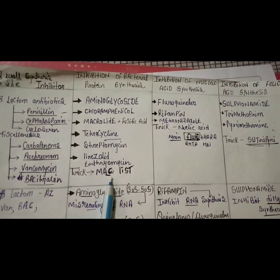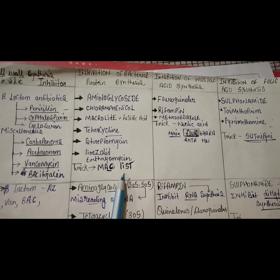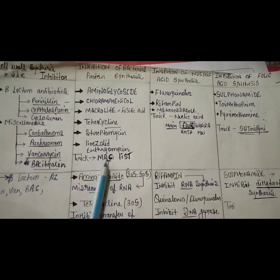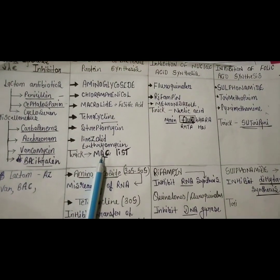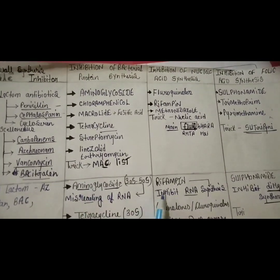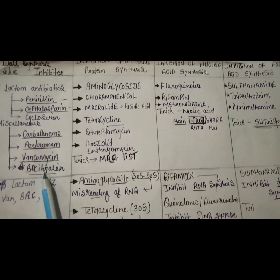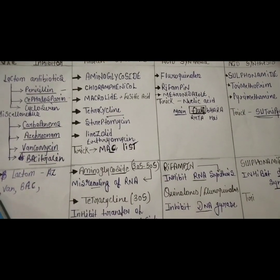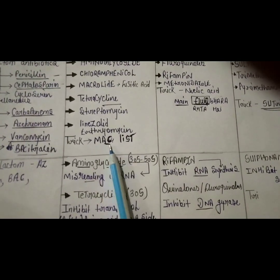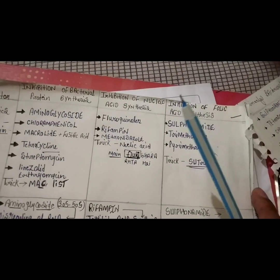From the MAC LIST: M will be macrolides, A will be aminoglycosides, C will be chloramphenicol, L will be linezolid. Don't forget S and T — S for streptogramins and T for tetracyclines. C can be remembered with chloramphenicol, and L with linezolid, so together CL helps us remember them as a pair in the list.